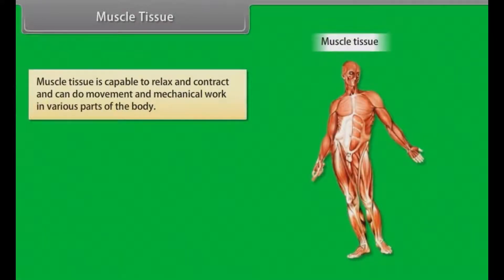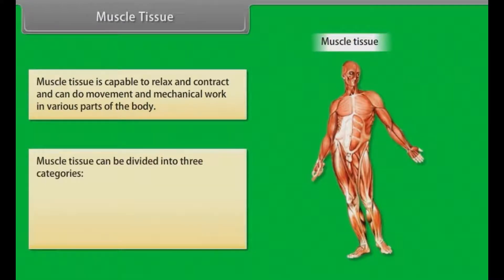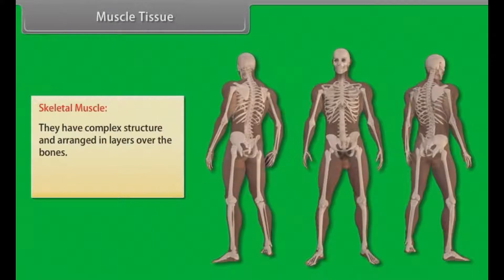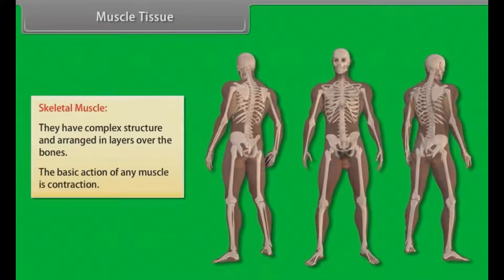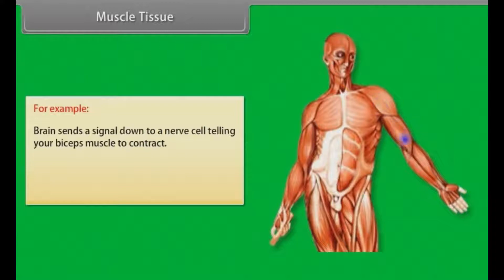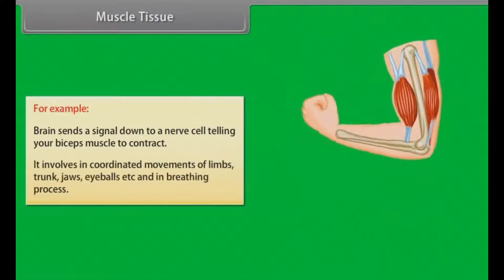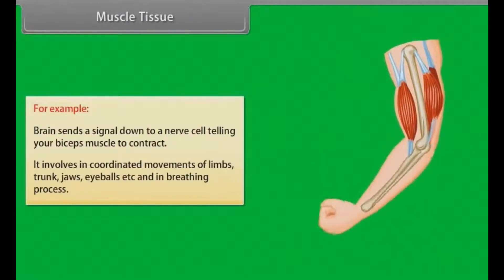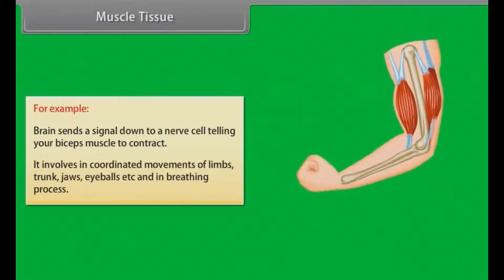Muscle tissue is capable of relaxing and contracting and can do movement and mechanical work in various parts of the body. Muscle tissue can be divided into three categories: skeletal, smooth, and cardiac. Skeletal muscles have complex structure and are arranged in layers over the bones. The basic action of any muscle is contraction — for example, the brain sends a signal down a nerve cell telling the biceps muscle to contract. Skeletal muscle is involved in coordinated movements of limbs, trunk, jaws, eyeballs, etc., and in the breathing process.